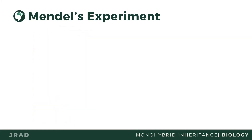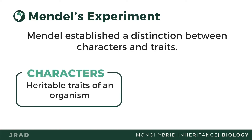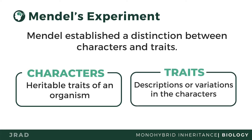The experiment of Mendel revolved around observing garden peas. His observations started with chosen characters of the plant. A character is a heritable feature of an organism, such as seed color or hair color. How a character is expressed varies from one individual to another. A description of the character, such as green seed color or purple flower color, is called a trait.